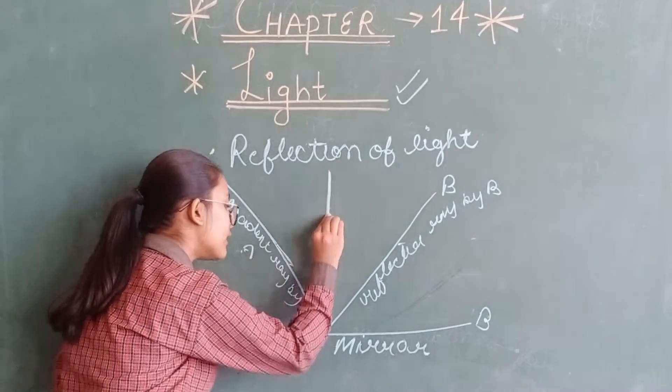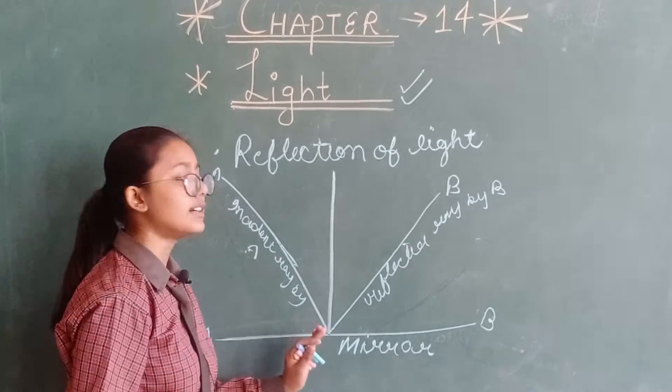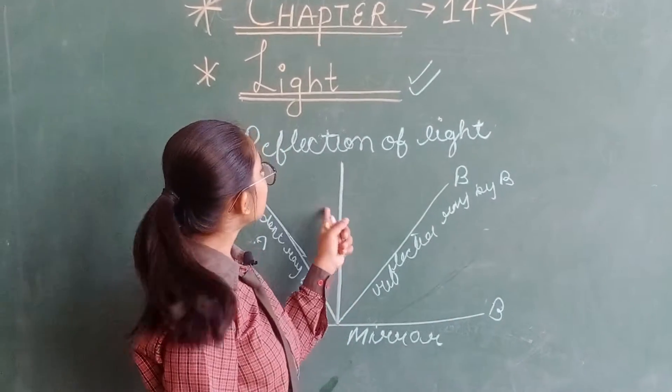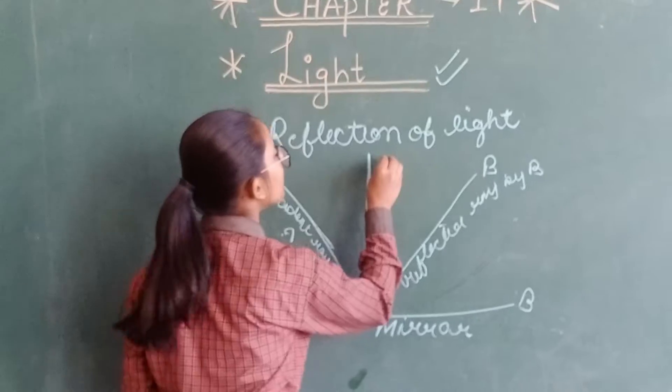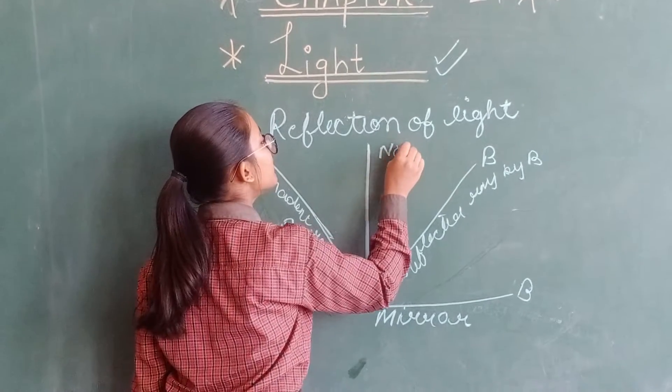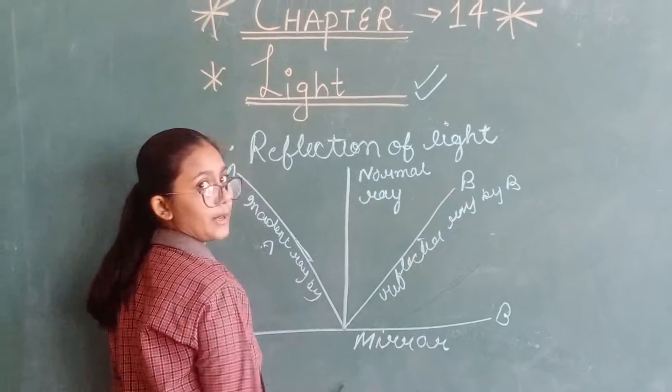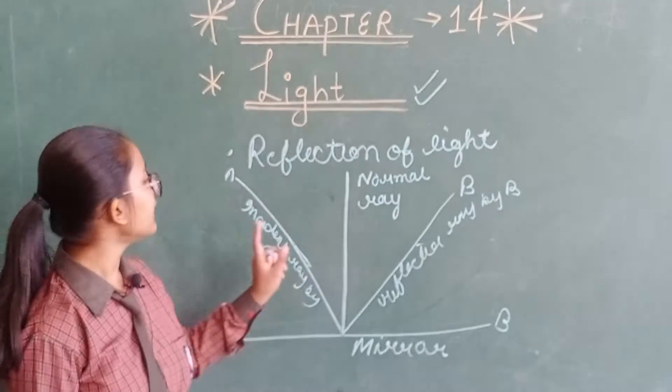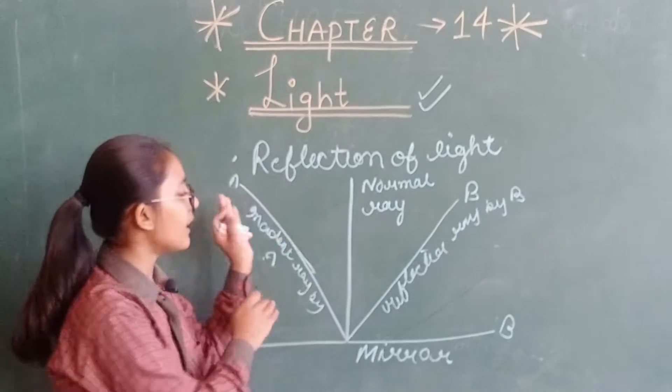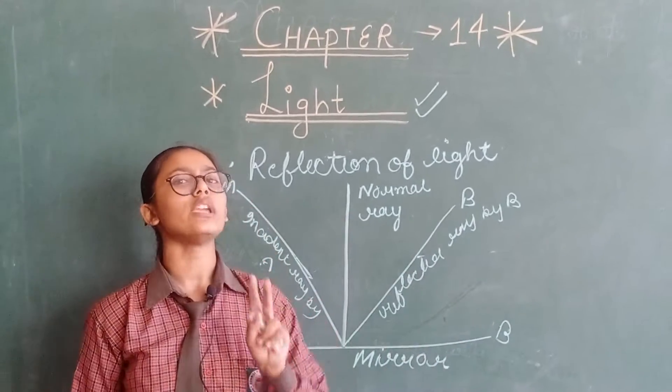Now, there is one more ray on the surface of the mirror. This ray is called normal ray. This ray divides incident ray and reflected ray into two equal halves.